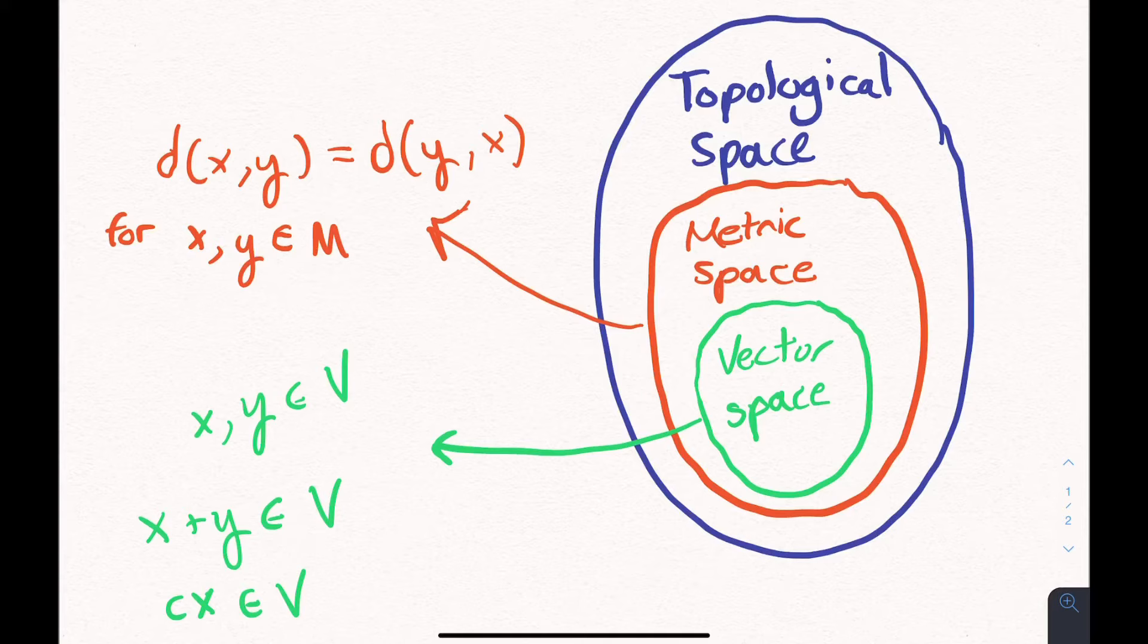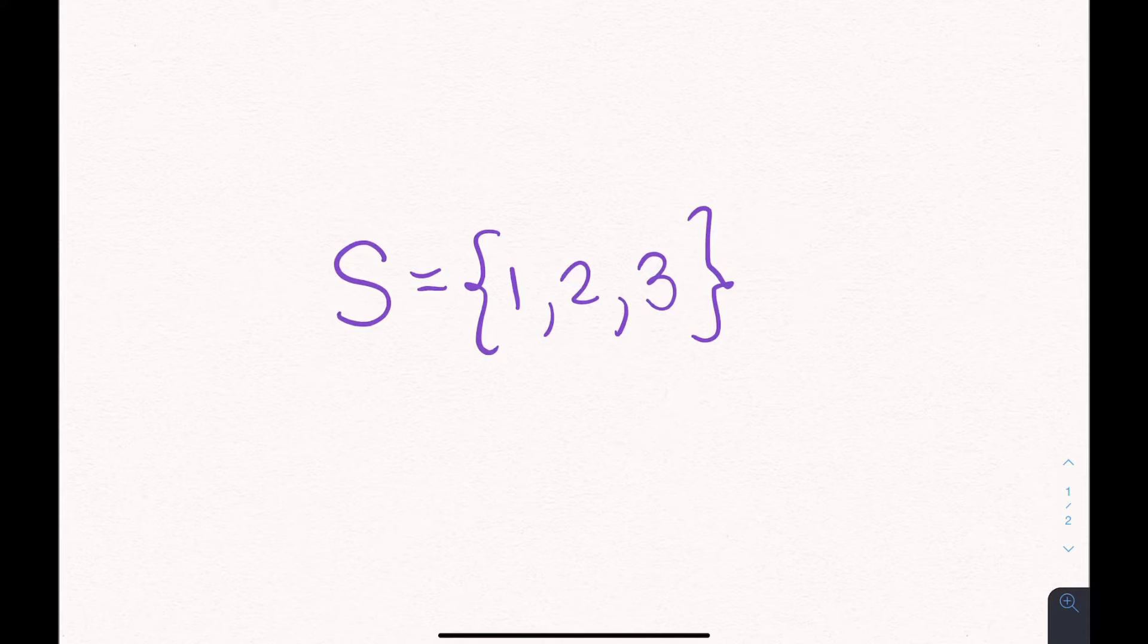Let's zoom out even further to the topological space. We are now in a class of spaces where the very concept of distance no longer applies. Topological spaces do not make use of any kind of geometric definitions. Instead, they are defined using only the language of set theory.